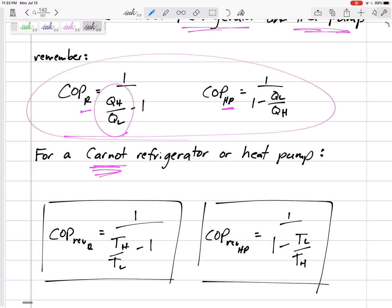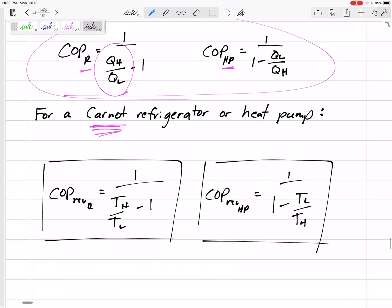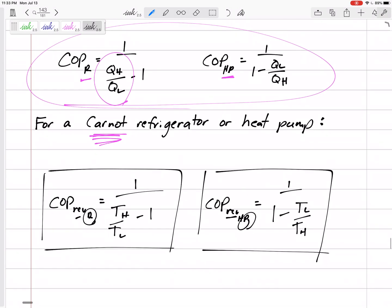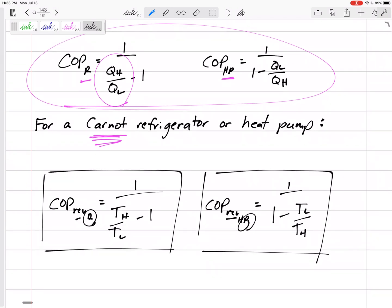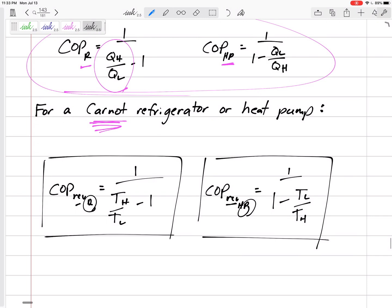Write those down very carefully, use them very carefully. This is for a refrigerator, this is for a heat pump. Only if they're reversible, because we replace the QHs and QLs with THs and TLs. Again, can't emphasize enough, THs and TLs have to be absolute temperatures.